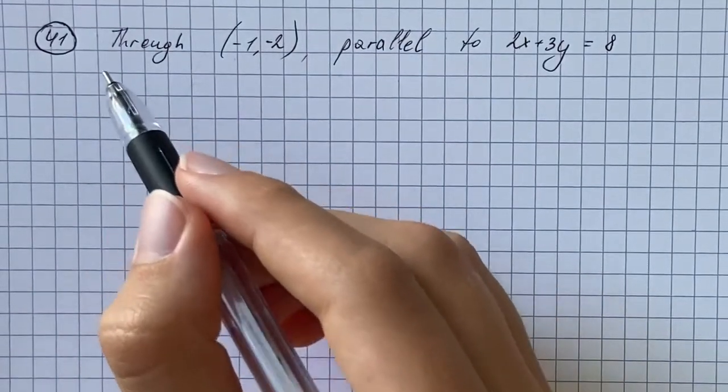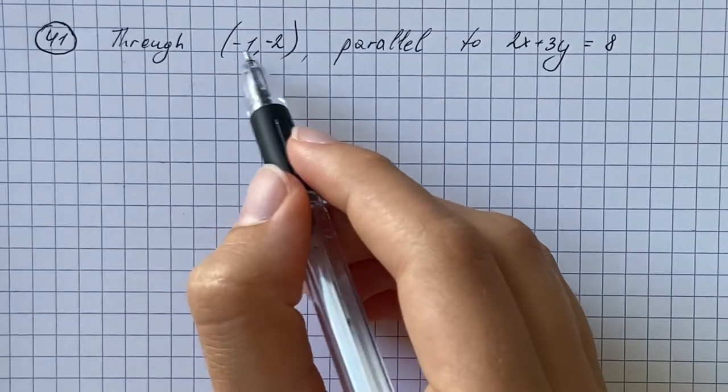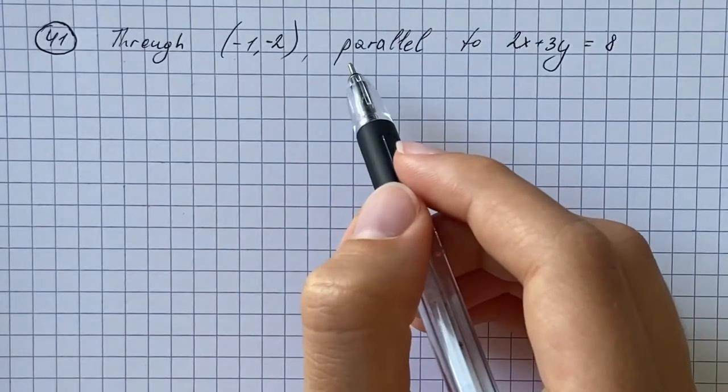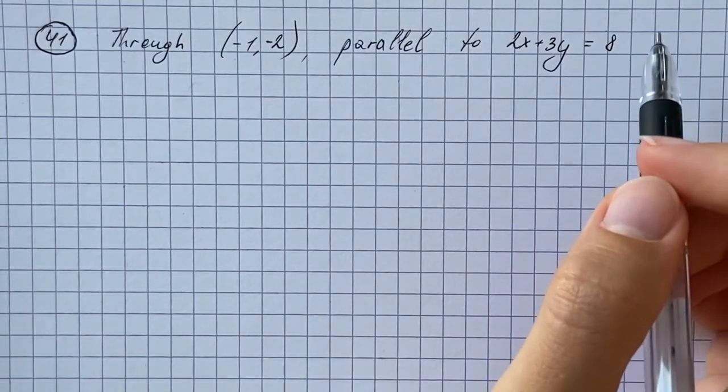Number 41 says that we should find the equation for a line which goes through point (-1, -2) and parallel to line 2x plus 3y equals 8.